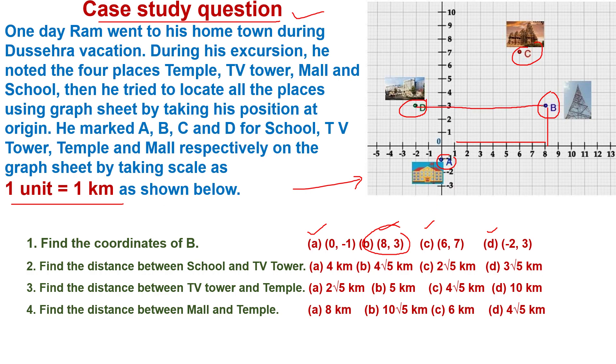I mean, find the coordinate of this point, find the coordinate of this point, and apply the formula: root of (x2 minus x1) whole square plus (y2 minus y1) whole square.